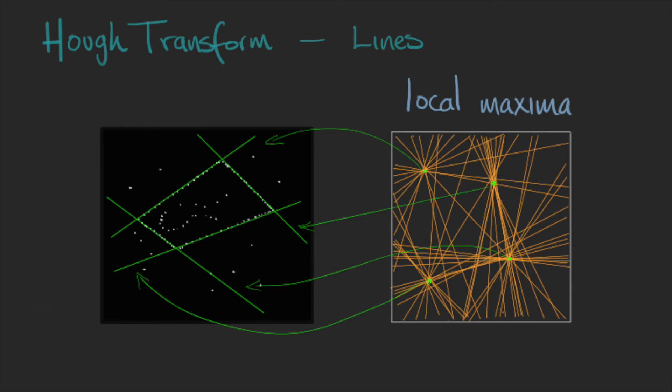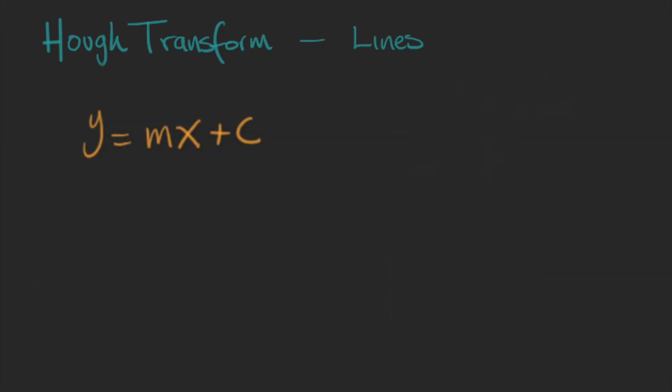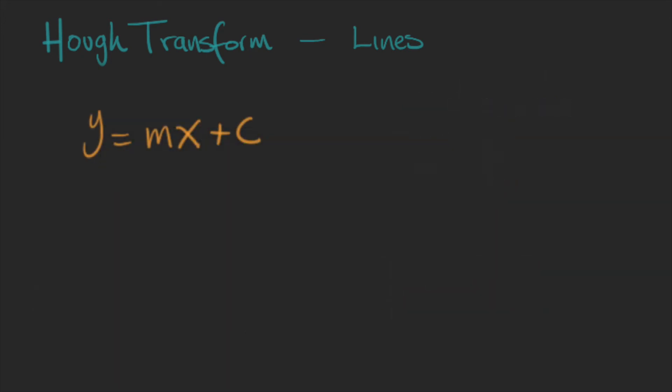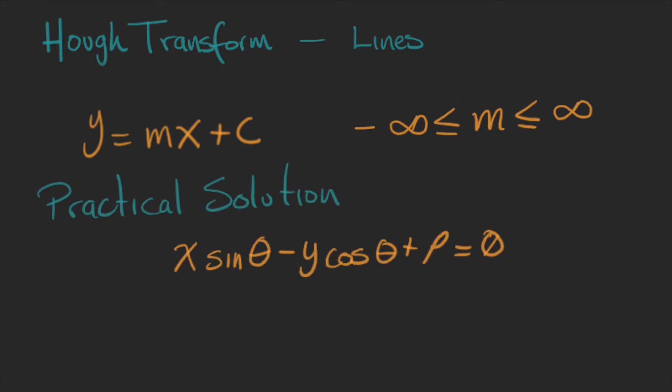However, in reality, the use of the line equation in this way represents a problem. M can go from minus infinite to infinite, so in practice, the line equation is better represented by the following form.